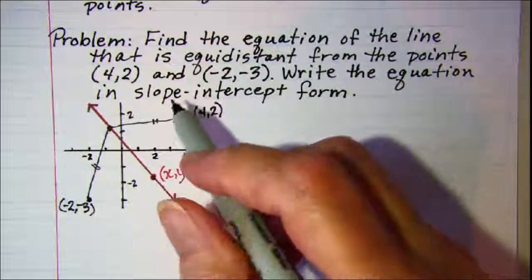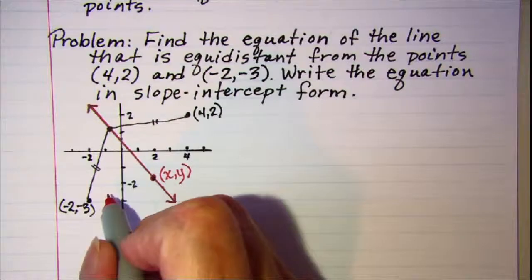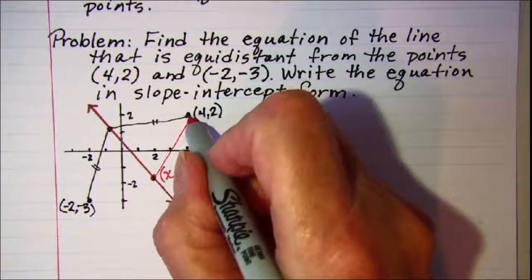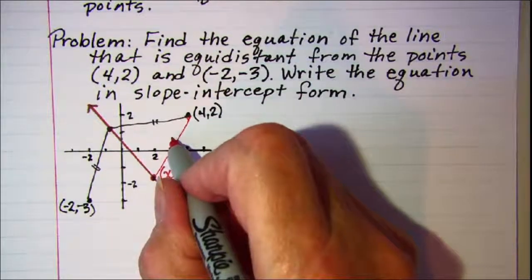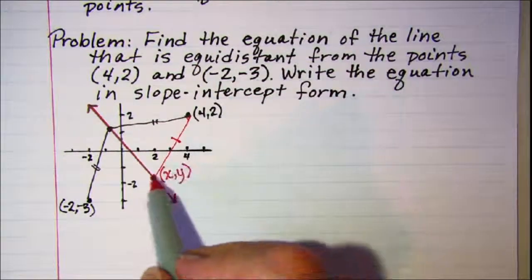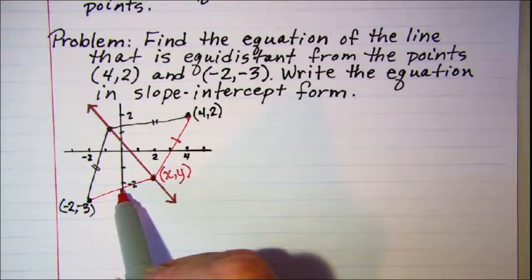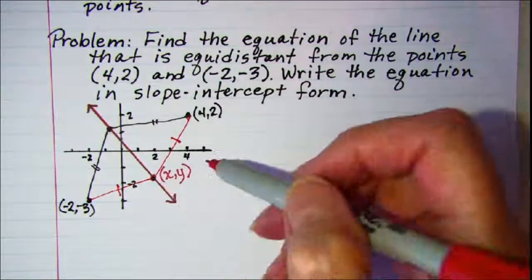But we do know now that the distance from this point to the point (4, 2) is equal to the distance from this point to the point (-2, -3). And that's true about any point on the line.